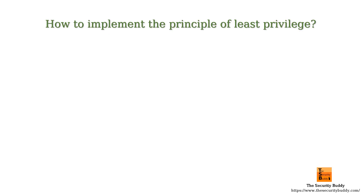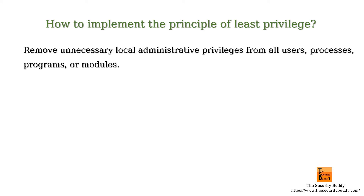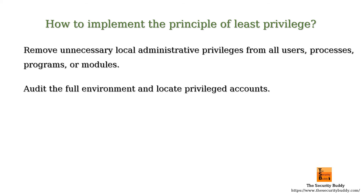How to implement the principle of least privilege in an organization? Remove unnecessary local administrative privileges from all users, processes, programs or modules. Only the necessary access rights should be given. Audit the full environment and locate privileged accounts.